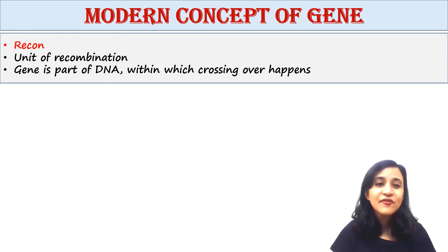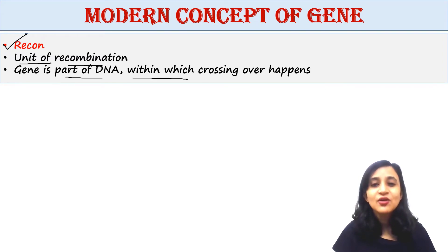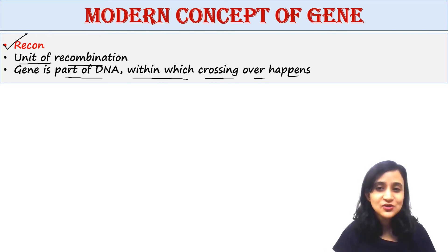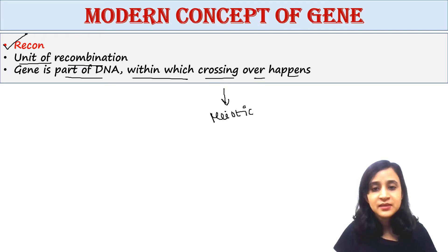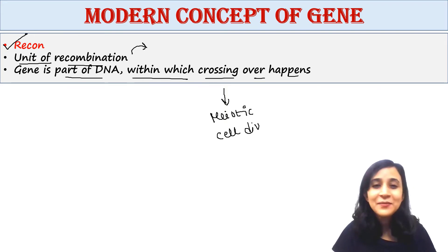Next is recon. Gene is also called recon or unit of recombination because gene is a part of DNA within which crossing over happens. Crossing over is the exchange of genetic materials between two homologous chromosomes, which occurs in meiotic cell division. If crossing over occurs, then recombination will occur — that is the concept of recon.